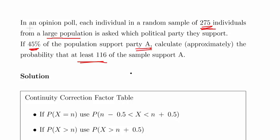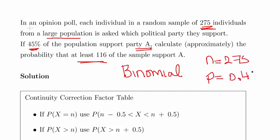So this is a binomial one essentially, binomial distribution. The sample size here is 275 and the probability of a success is 0.45. And what we're asked to find out is the probability of X, the number of people being greater than at least 116. So X is the number of people who support this party out of the sample of 275.